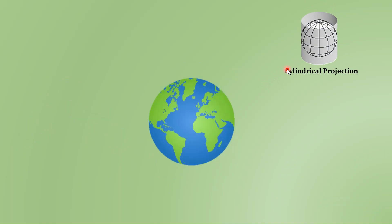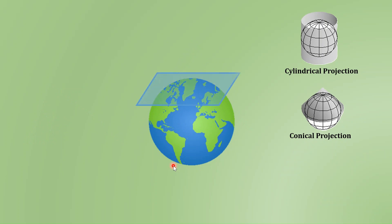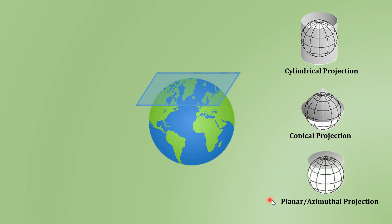The second consideration is that if we take a paper and fold it like a cone and place it over the globe such that the axis of the cone aligns with the polar axis of the earth, this type of projection is referred to as the conical projection. Third, if we lay down a piece of paper either over the north pole or over the south pole, this type of projection is referred to as the planar or azimuthal projection. These are the techniques of wrapping the developable surface around the globe.